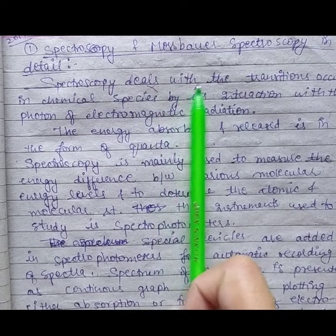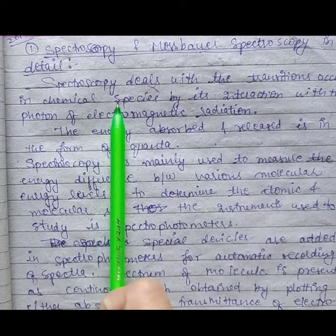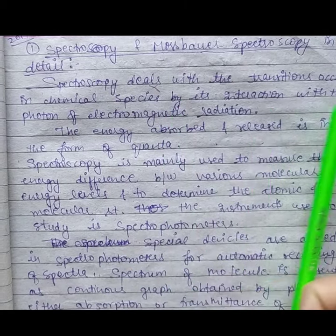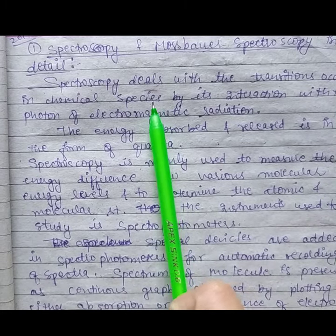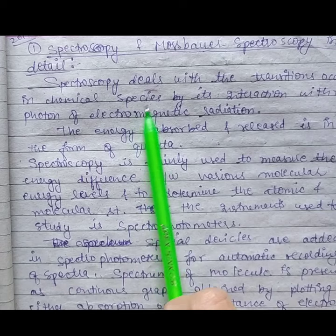Spectroscopy deals with the transitions that occur in chemical species by its interaction with the photon of electromagnetic radiation. Spectroscopy deals with the transitions that occur in chemical species.